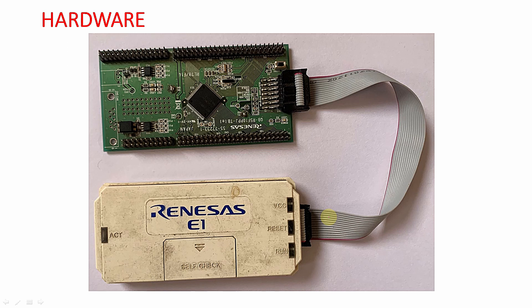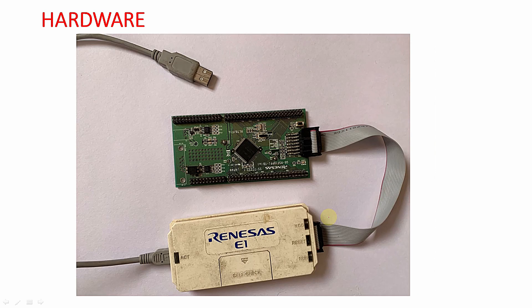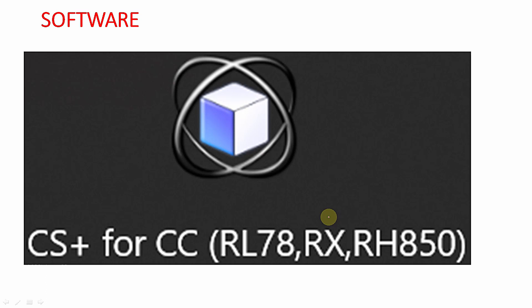This is the basic connection we are going to make for programming and debugging the microcontroller. I will be connecting the FRC cable from the Renesas E1 emulator directly to the development board, and then connecting a mini USB cable from the Renesas E1 emulator to the PC USB port so that I can program the microcontroller directly from the IDE.